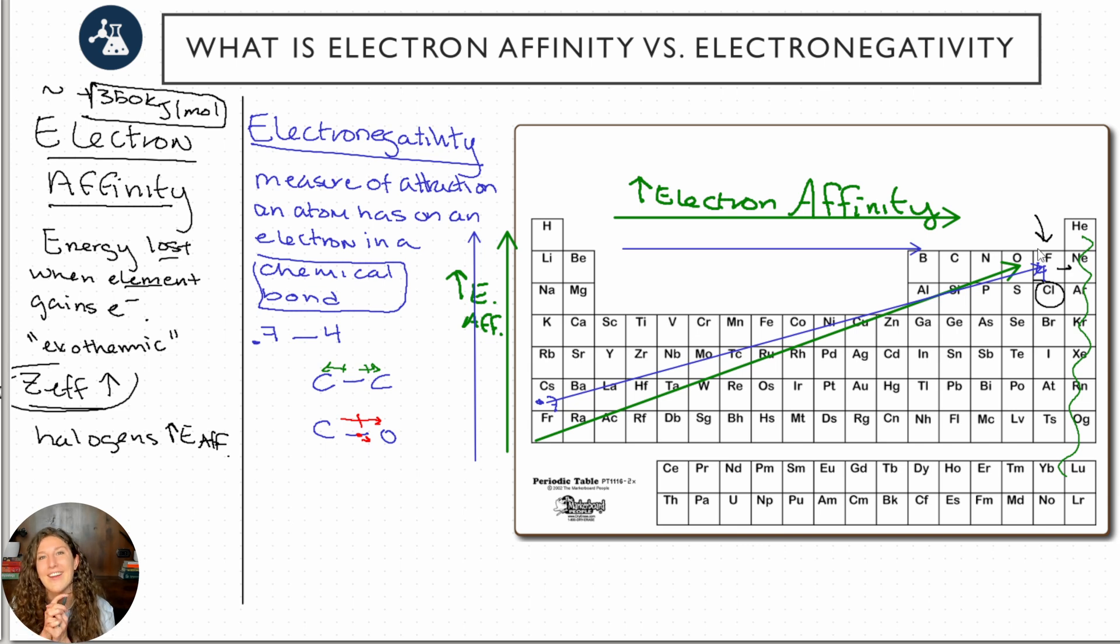We're starting to build this idea of what do atoms want, what do they desire? And again, they desire that full octet, which means they're really willing to gain electrons if they're over here in the non-metal category, and they're really willing to lose electrons, so they don't have a high electronegativity or electron affinity over here in the metals category. In fact, having an electronegativity of less than two indicates a metal.